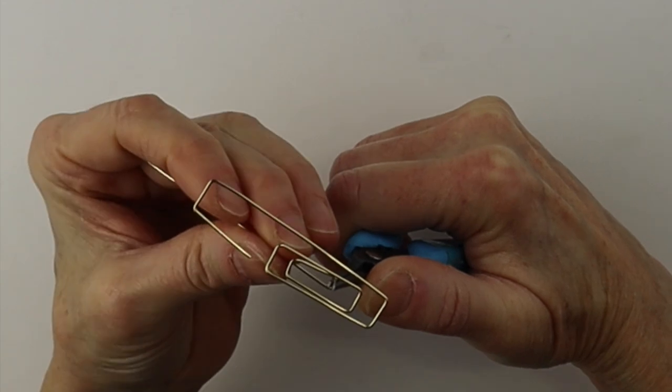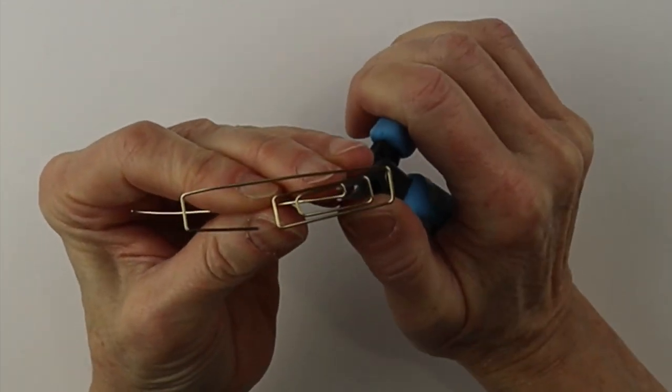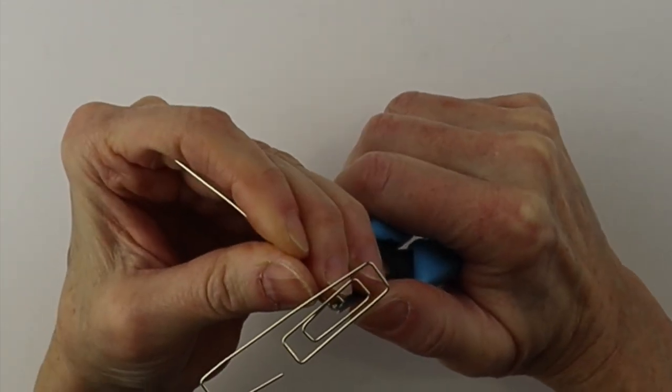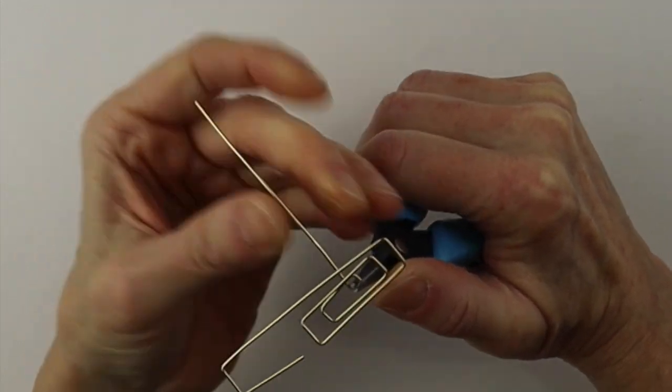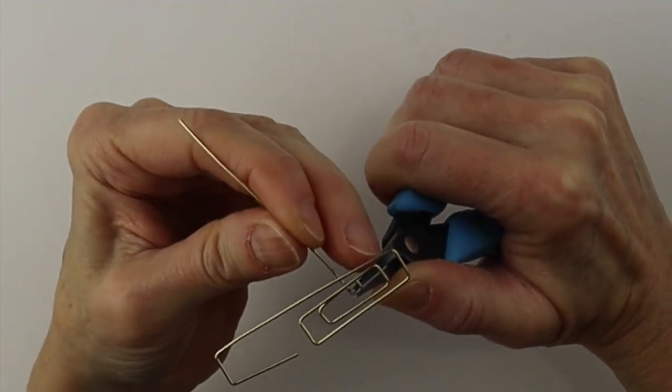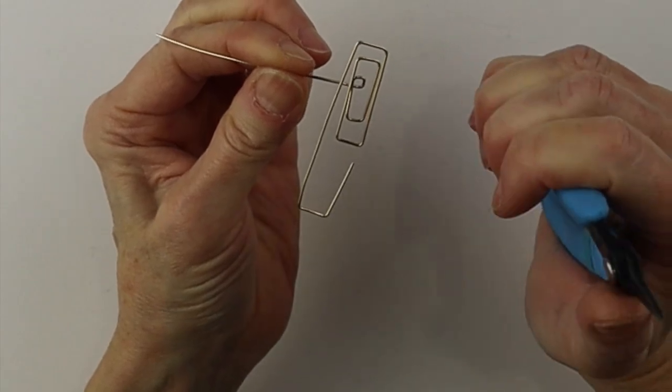Give it a good push and then bend this straight across. Give it a good little push. So it makes a small square.